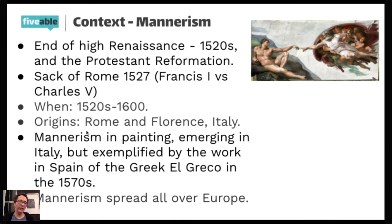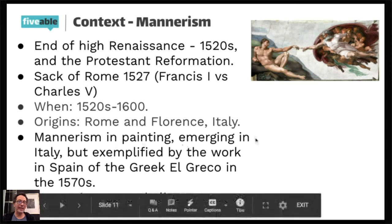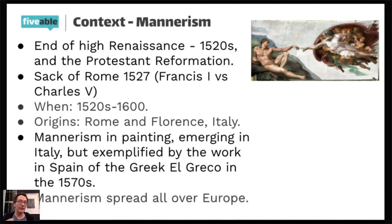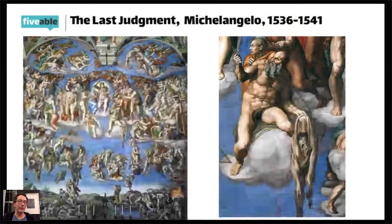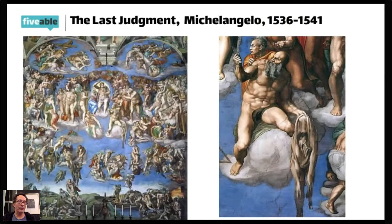Mannerism originated in Rome and Florence, the centers of art, and from there expanded outside of Italy. Interestingly, one of the most famous mannerist painters was not Italian — El Greco studied in Italy but made his career in Spain. It started in Italy and actually achieved its peak in Spain. Mannerism starts with the followers of Michelangelo and Raphael, and we can see that Michelangelo himself was turning darker in his later paintings.